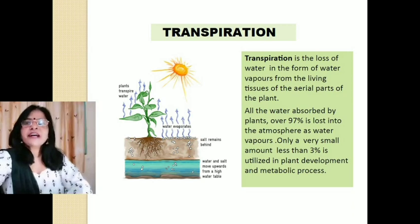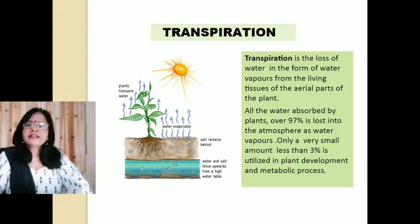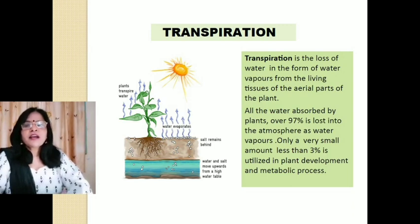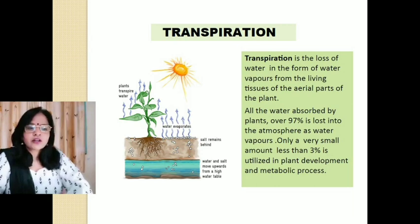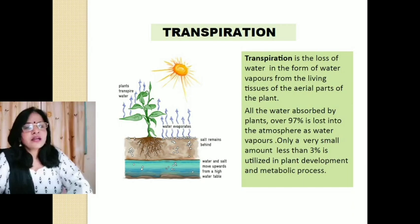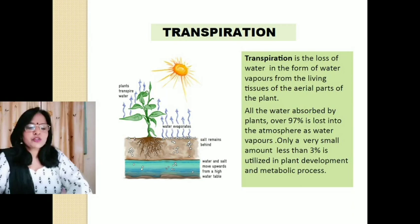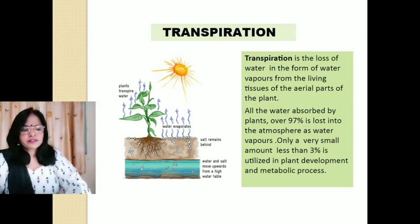Transpiration can be defined as the loss of water in the form of vapors from the living tissues of aerial parts. All the water which is absorbed by plants, over 97% is lost into the atmosphere as water vapors. Only a very small amount, around 3%, is utilized in plant developmental and metabolic processes.